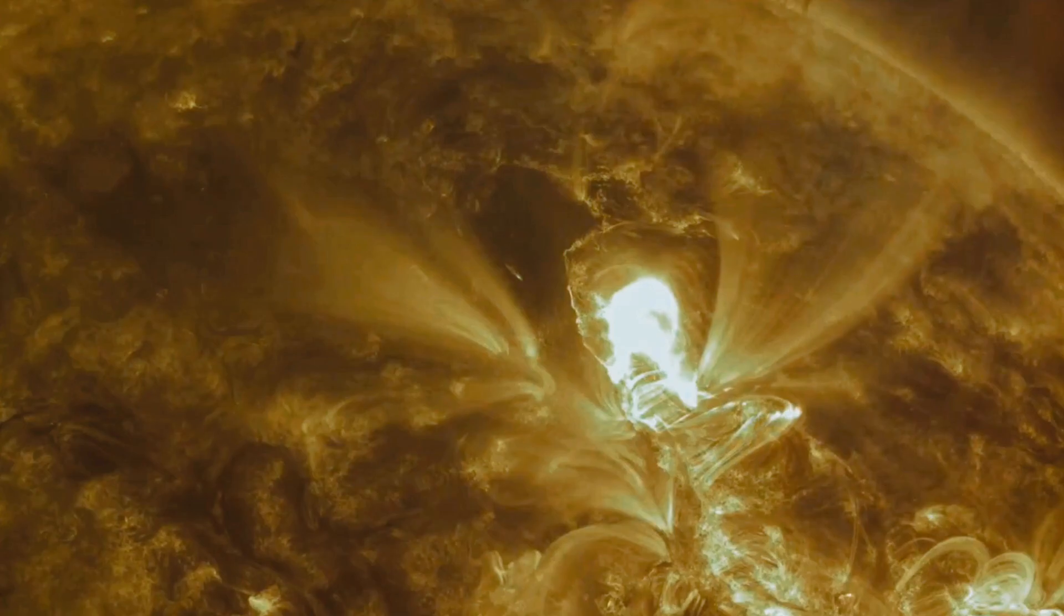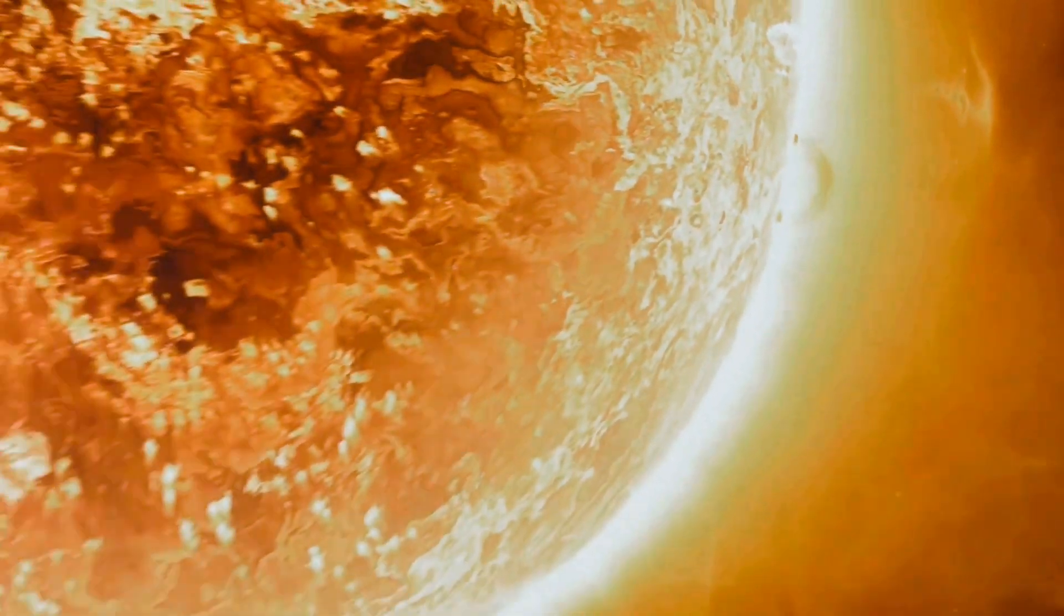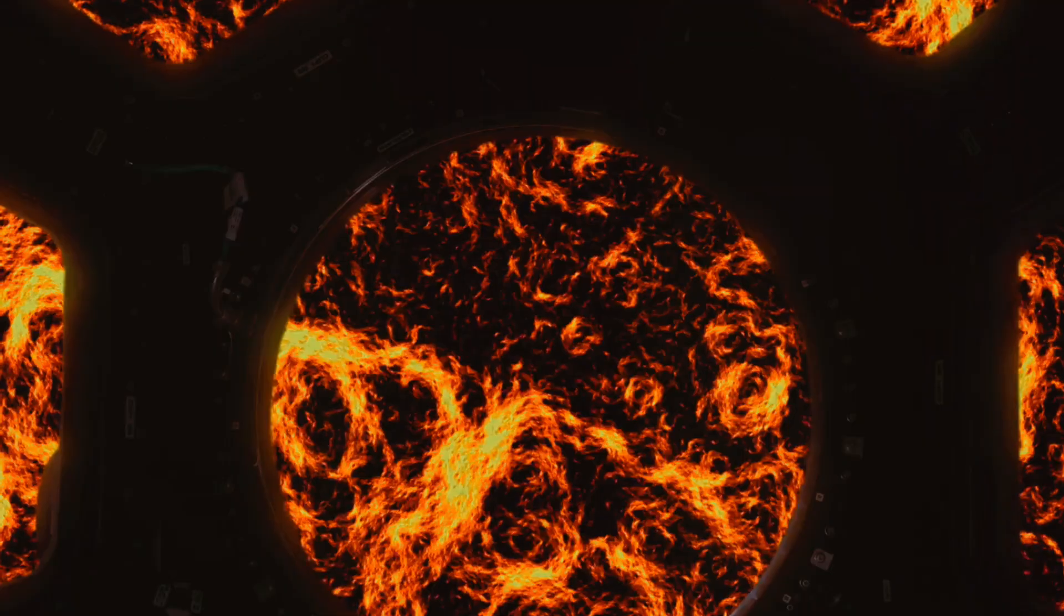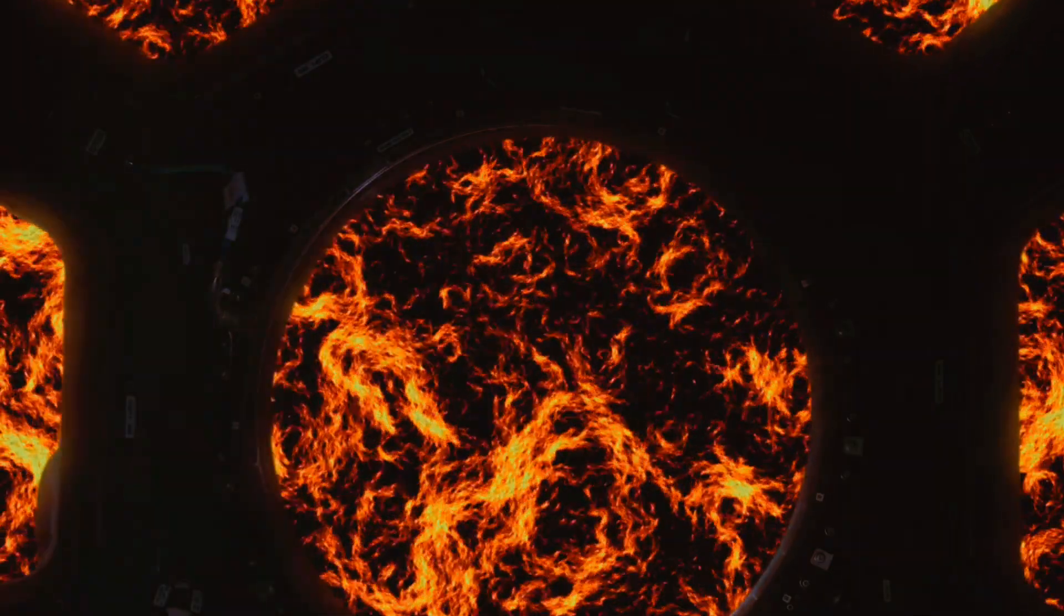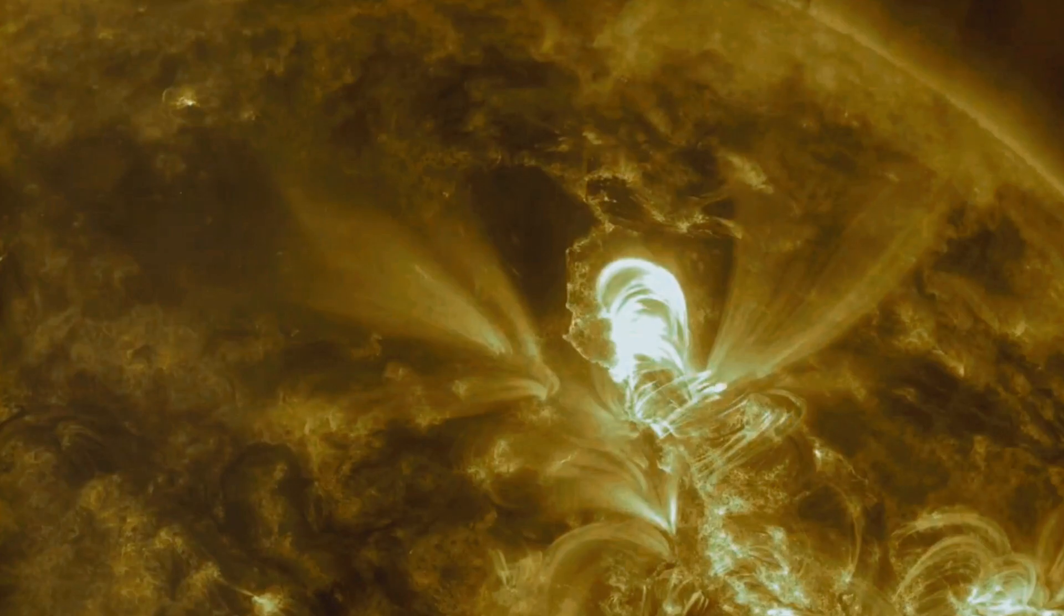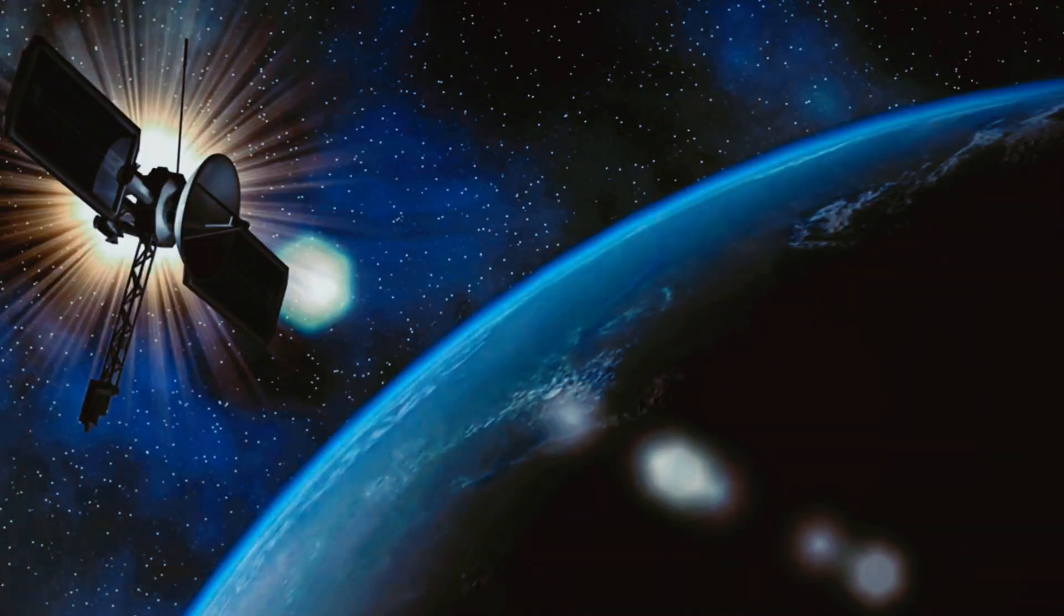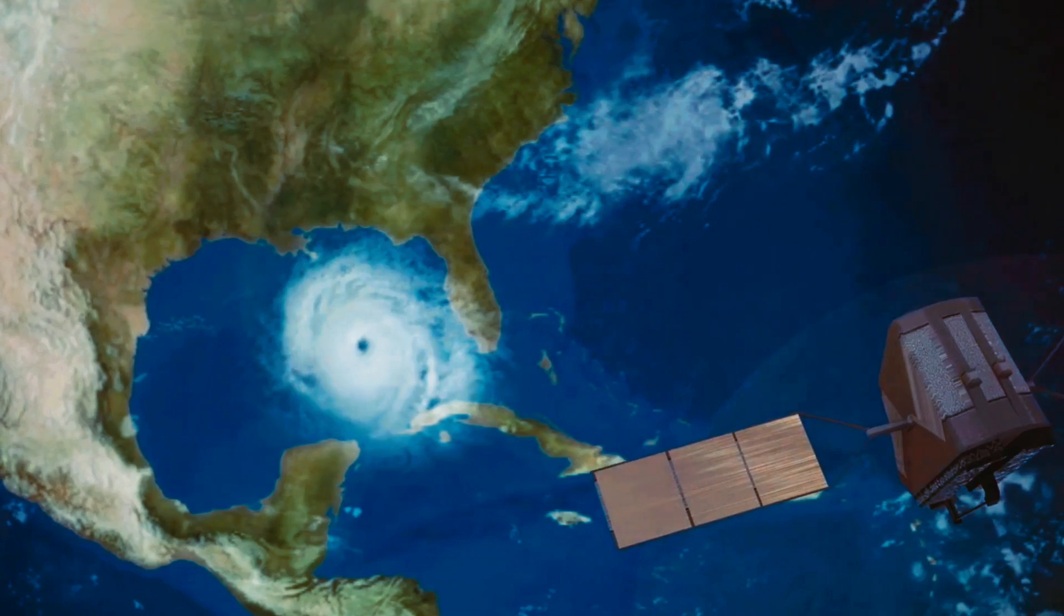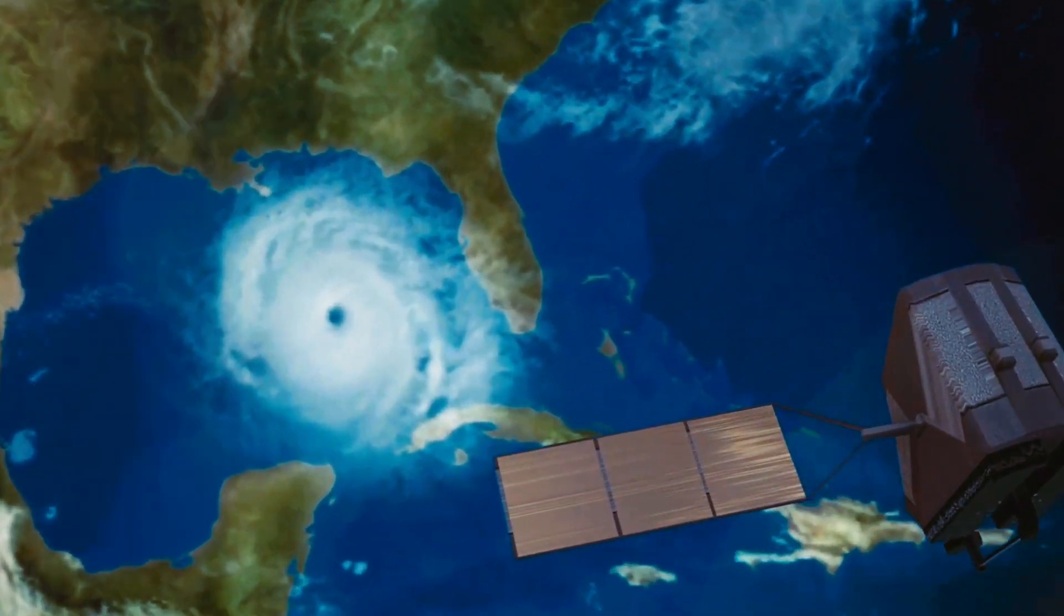The sun, our life-giving star, is not always so benevolent. It can unleash bursts of energy called solar flares. These flares are sudden eruptions of intense radiation. Imagine a colossal explosion on the sun's surface, releasing energy equivalent to millions of hydrogen bombs detonating simultaneously. That's the power of a solar flare. These flares are often associated with sunspots, cooler regions on the sun's surface.